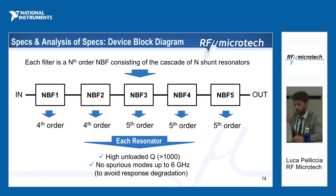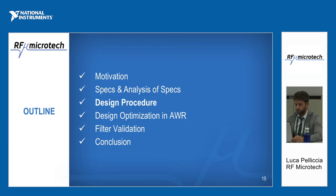Another important requirement is to avoid the presence of harmonics — spurious modes — up to 6 GHz, because otherwise we have repetitions of the notch at frequencies where transmission must be ensured. This is mainly critical for the lower-frequency notch bands where the frequency is less than 1 GHz, and we need to avoid harmonics above six times the central frequency of the notch.